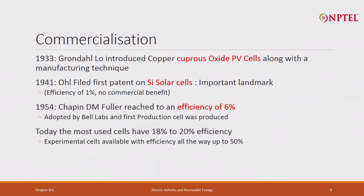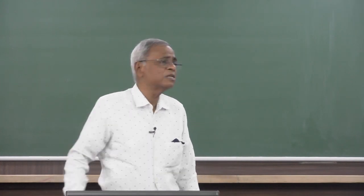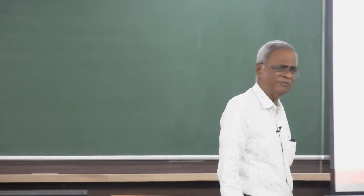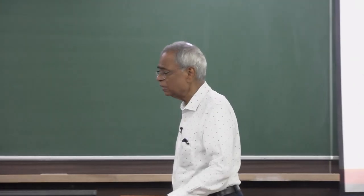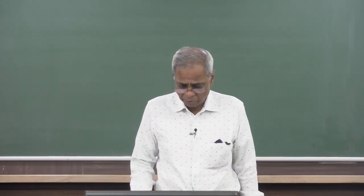In 1954, Chapman and D.M. Fuller reached an efficiency of 6 percent — the first time it became practical enough to use. It was adopted by Bell Labs and production of cells began. The first usage was in space, because even at 6 percent efficiency it was the easiest way to produce electricity on rockets. Today, 18 to 20 percent efficiency is very common, 22 percent is fairly common, and there are experimental cells with efficiency as high as 50 percent.